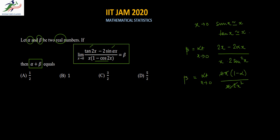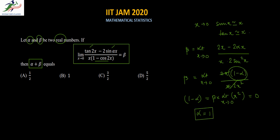This expression equals beta. We can see that the numerator is a constant term, so we can rewrite this as: 1 minus alpha equals beta times x² as x tends to 0. If we put x equal to 0, the right side becomes 0, so alpha equals 1. We have found the value of alpha.